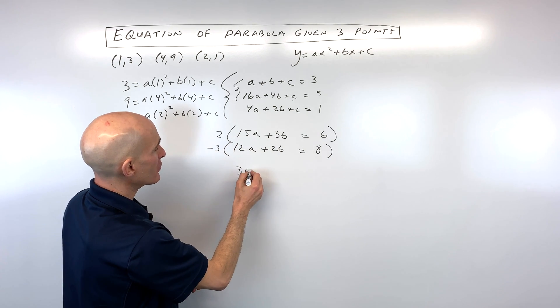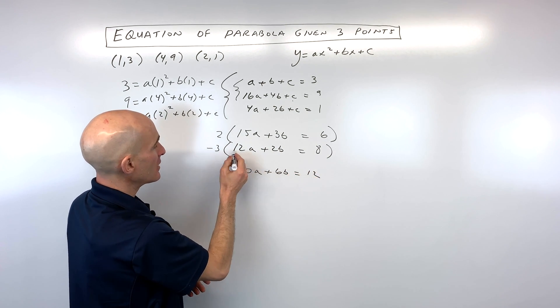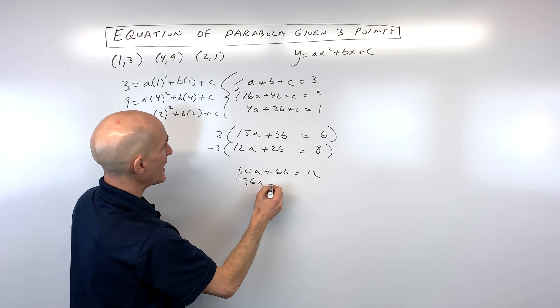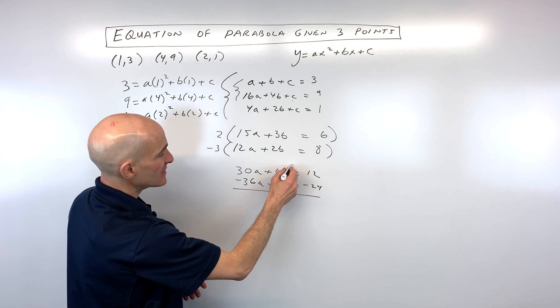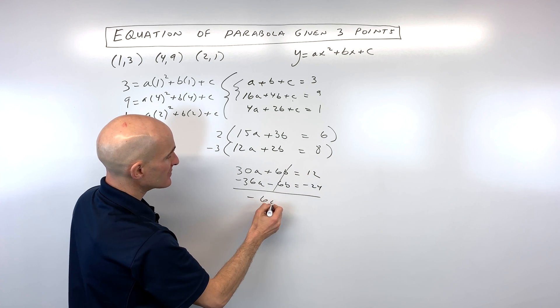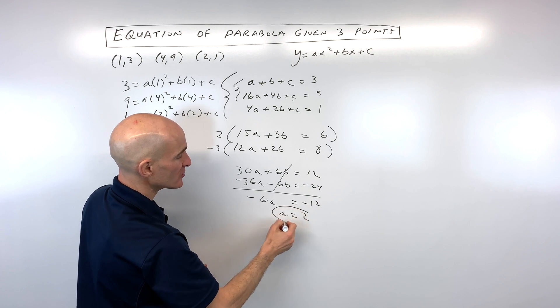2 times 15a is 30a plus 6b equals 12. Here we get negative 36a minus 6b equals negative 24. When you add these together, the b's cancel. We get negative 6a equals negative 12 divided by negative 6. And you can see that a is equal to 2.